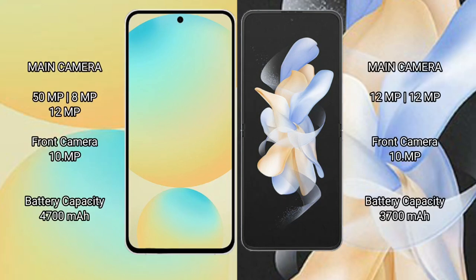Samsung Galaxy S24 FE has a triple rear camera setup: 50MP plus 8MP plus 12MP, and a 10MP front camera. Samsung Galaxy Z Flip 4 has a dual rear camera setup: 12MP plus 12MP, and a 10MP front camera.